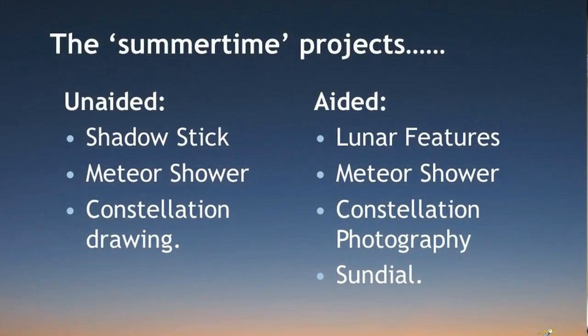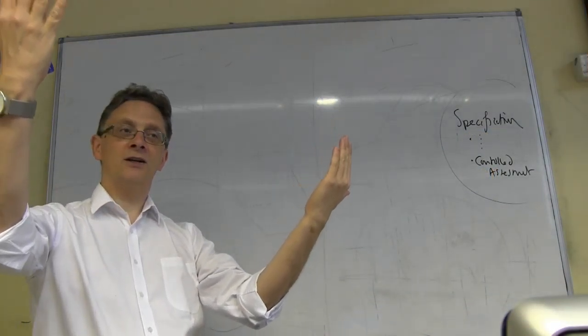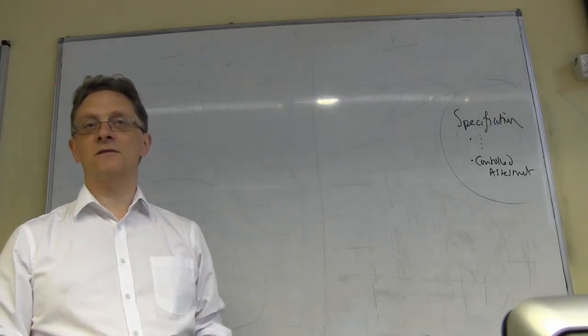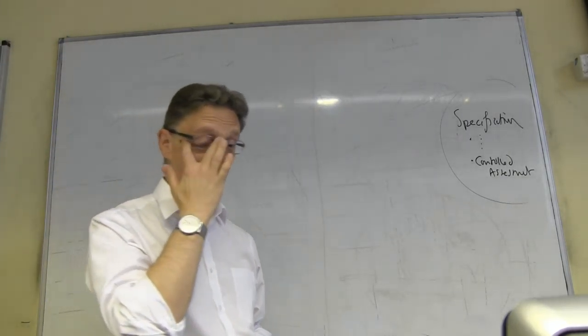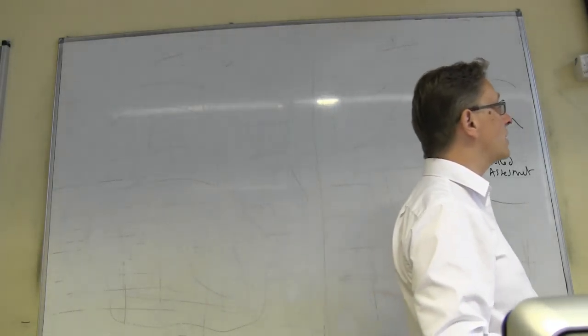There are, of course, the aided versions. Lunar features. I've talked about meteor shower, constellation photography, and some people have mentioned sundial. If you've got a sundial near you, a local church maybe, you can sit there with a clock and a sundial, and they'll record different times, and you can measure the difference, and that apparently is a task that you can do. Okay? So those are the ones.